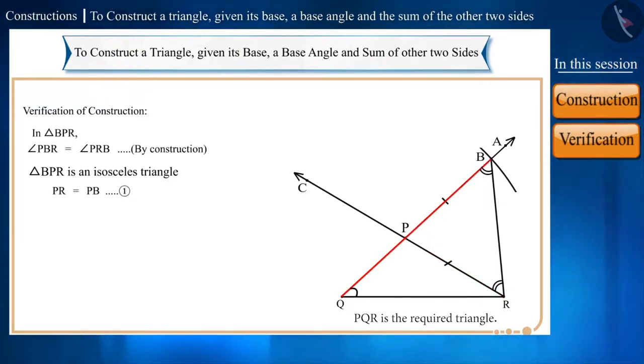Side PQ and side PB together form side BQ. Therefore, we will write it like this. Using equation 1. Hence, the sum of the other two sides is equal to the sum of the other two constructed sides. Therefore, the construction done is correct.